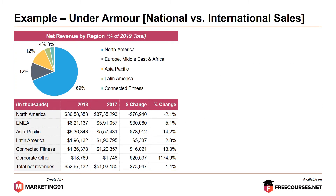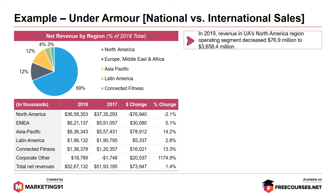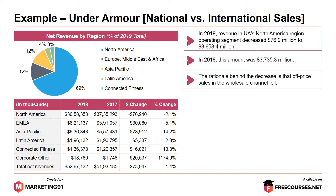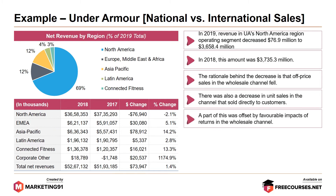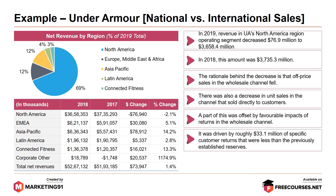Moving on to an example of Under Armour's national vs. international selling. As stated by the graphs, in 2019, revenue in Under Armour's North American region decreased $76.9 million to reach $3.6 billion. In 2018, this amount was $3.7 billion. The rationale behind the decrease is that off-price sales in the wholesale channel fell. There was also a decrease in unit sales in the channel that sold directly to customers, partially offset by favourable impacts of returns in the wholesale channel, driven roughly by $33.1 million for specific customer returns that were less than the previously established reserves.